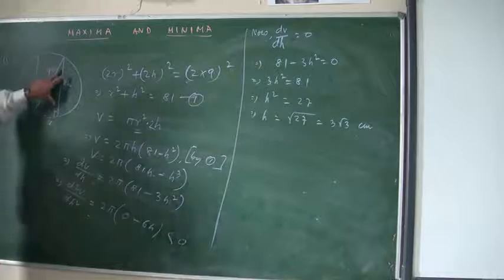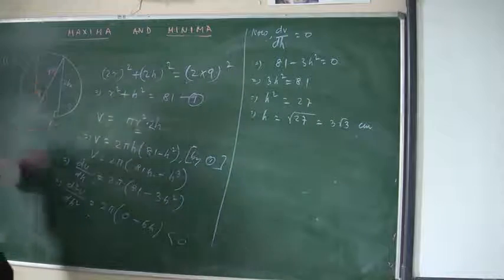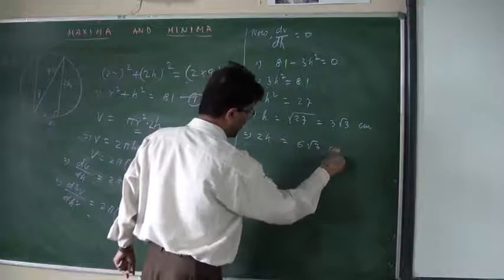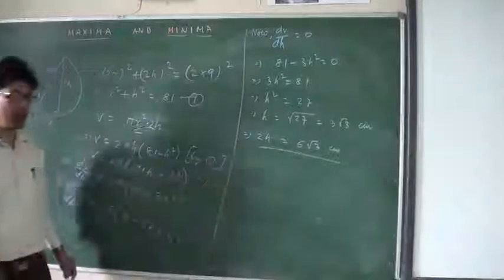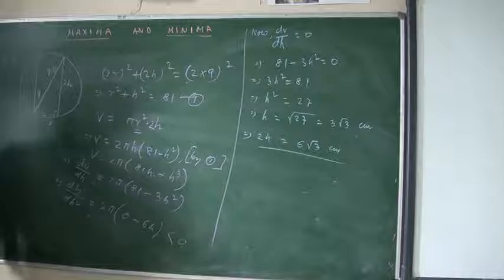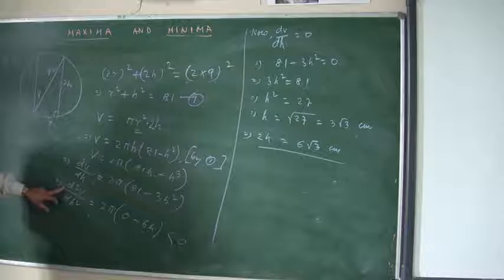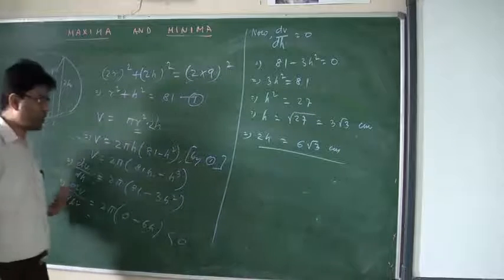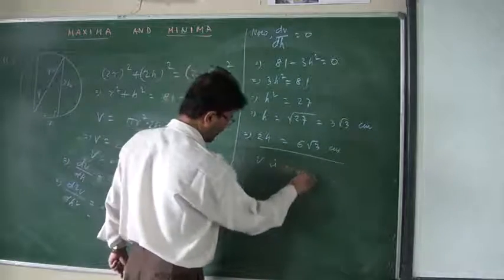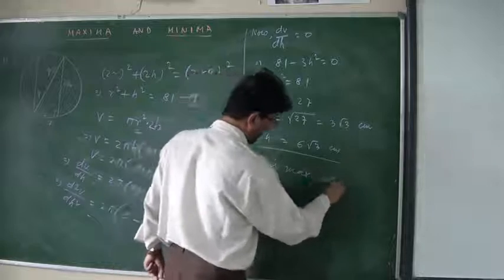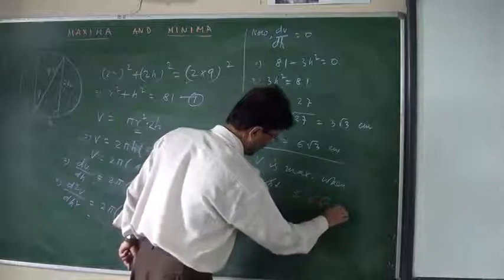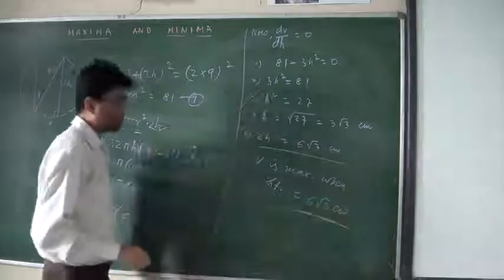The question asks for the height, and in the figure the height is 2h. I have got h = 3√3, so 2h = 6√3 centimeters. The question was to find the height of the cylinder so that the volume is maximum. Since the second derivative is less than 0, the volume is maximum when the height equals 6√3 cm. So this is the method to solve this type of problem.